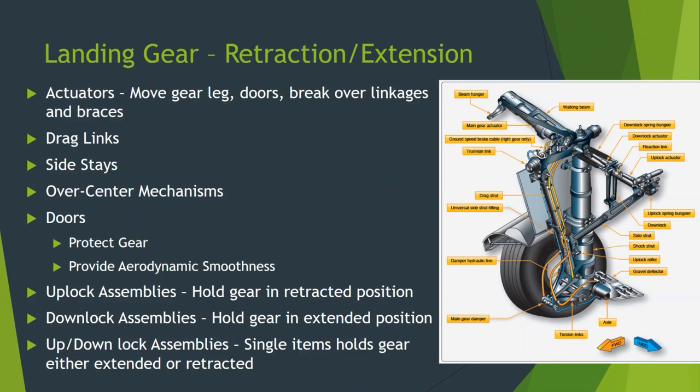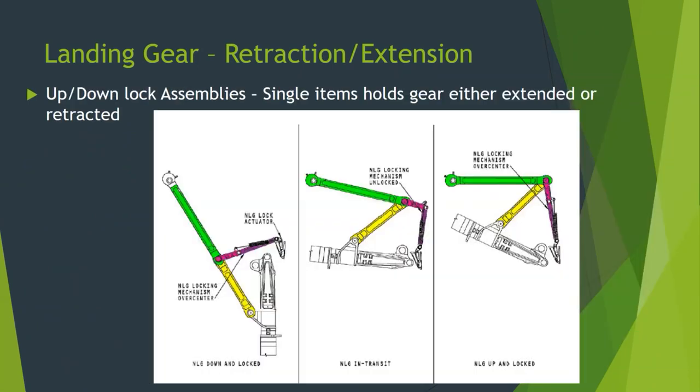Down-lock assemblies work similarly — most tend to be an over-center mechanism, but other methods are employed depending on the manufacturer, including hydraulic locks. In some cases, you can have a combined up-and-down lock assembly — a single item that holds the gear in either direction. The nose gear on the 727 uses an up-and-down lock like this.